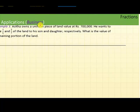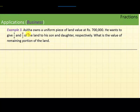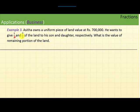The next example is from business. Asita owns a uniform piece of land valued at Rs. 700,000. He wants to give one-fifth of the land to his son and two-sevenths to his daughter. What is the value of the remaining portion of the land? Once he gives away those portions, whatever is left is his part, and he wants to know its value.